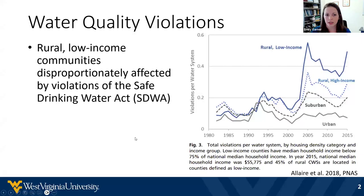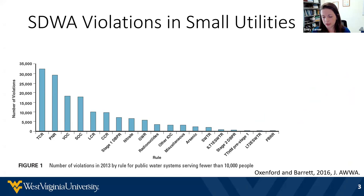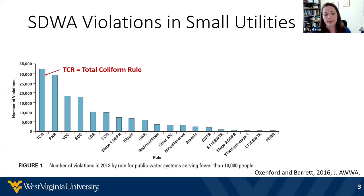My group works a lot with rural and small systems in the state and region. Part of the reason for that is that rural communities in general, but specifically rural and low-income communities, are disproportionately affected by violations of the Safe Drinking Water Act. A study published in the Journal of the American Water Works Association pulled data from 2013 from systems serving less than 10,000 people and demonstrates that the most common cause of Safe Drinking Water Act violations for small utilities is the total coliform rule.